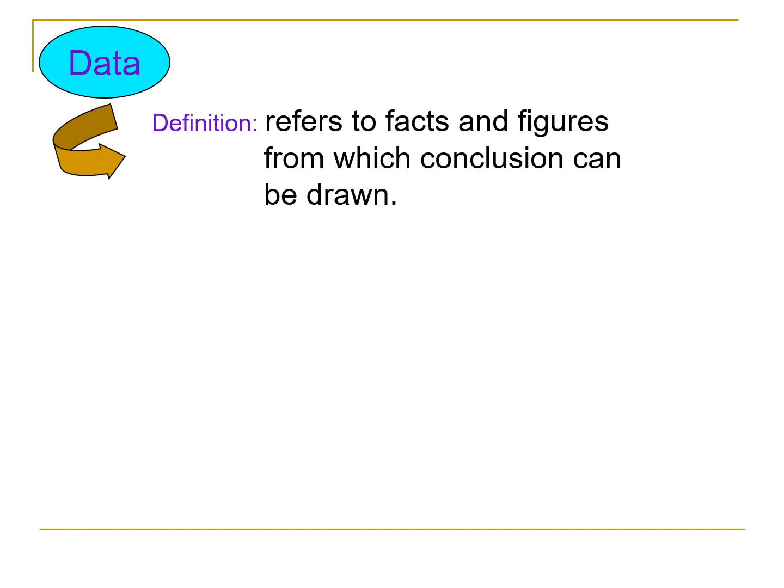You might be wondering what is the difference between a variable and data. In this discussion, data refers to facts and figures from which a conclusion can be drawn. Data also refers to a set of values that are usually organized by the variable. A variable is the interest of the study that is being measured.